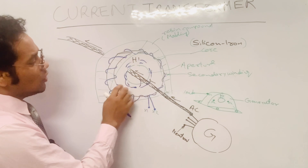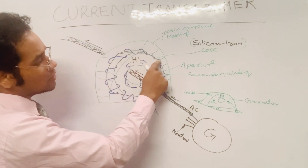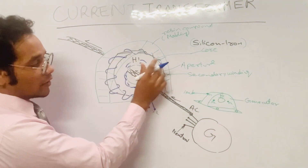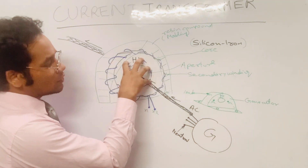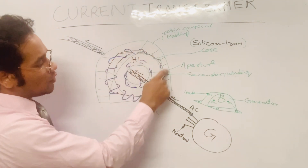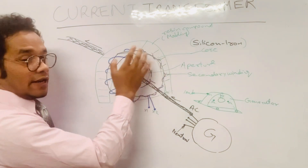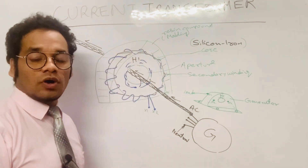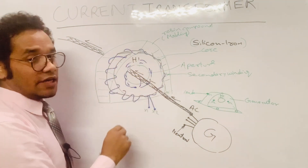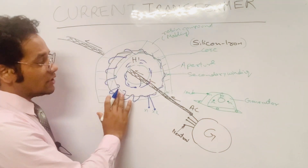This magnetic field is not stationary because the current flowing through the cable is alternating. We know that alternating current changes its magnitude and direction, because of which the magnetic field produced by the current is also moving. This moving magnetic field cuts the secondary windings of the current transformer. According to Faraday's law of electromagnetic induction, an EMF will be induced in these secondary windings.